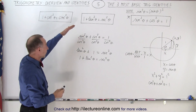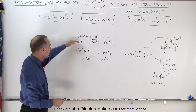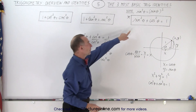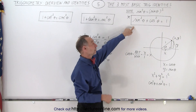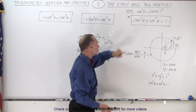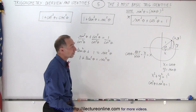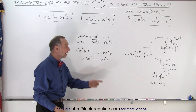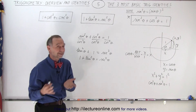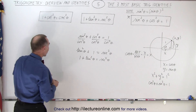You can see you don't have to memorize that one. You can very quickly derive it by taking our primary identity — sine squared of theta plus cosine squared of theta equals 1 — and dividing everything by cosine squared of theta to get that identity. And then if you divide everything by sine squared of theta, you should get the third one.